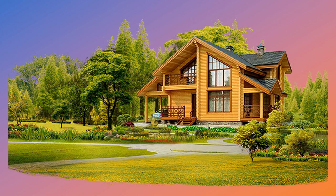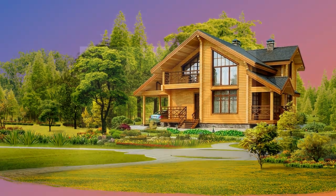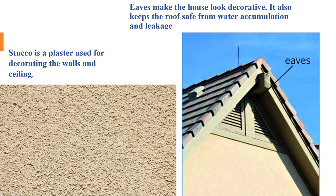Hope you've understood the difference between a house and a home. Now let's touch upon some difficult words like eaves and stucco, which are mentioned in the poem. Eaves, as you can see in this picture, make the house look decorative and also keep the roof safe from water accumulation and leakage. Stucco is a plaster used for decorating the walls and ceilings.